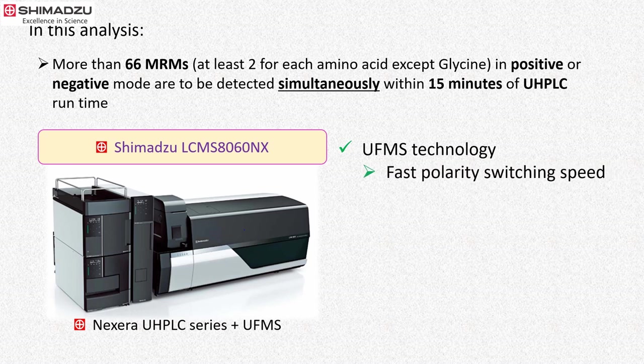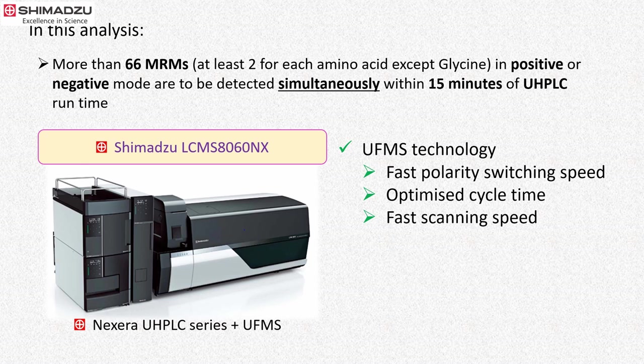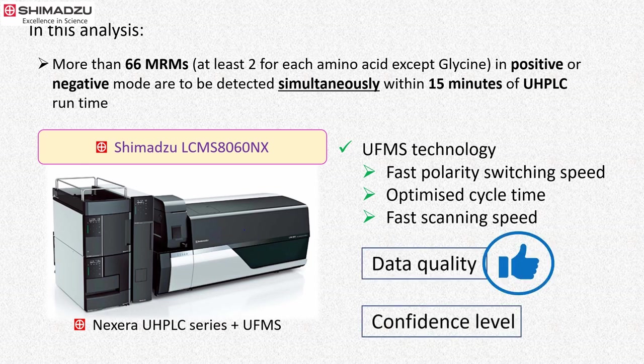Its fast polarity switching time helps to optimize cycle time. With fast cycle time and scanning speed, MRM of all amino acids can be detected with greater precision and confidence.